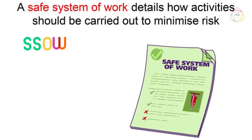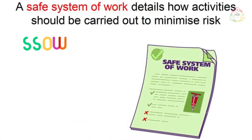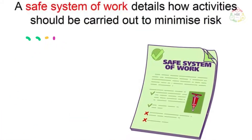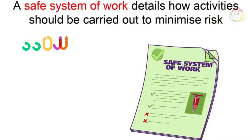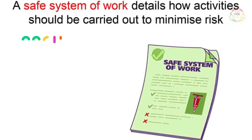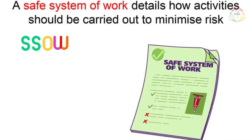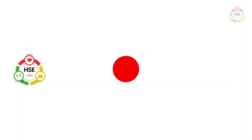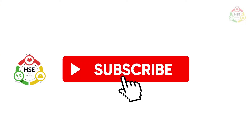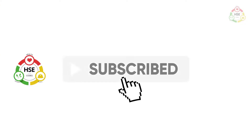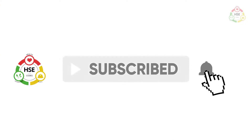A safe system of work (SSOW) details how activities should be carried out to minimize risk. Thank you for watching — don't forget to subscribe to HSE with Codes.